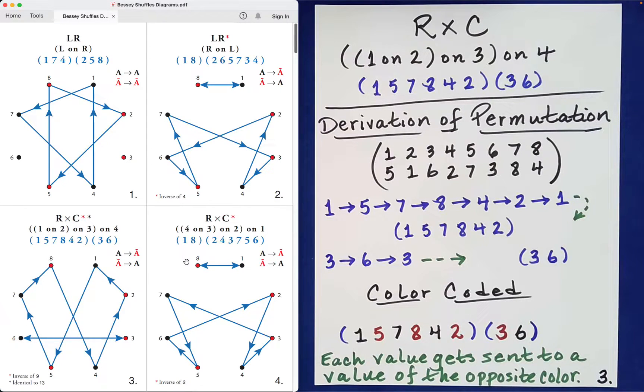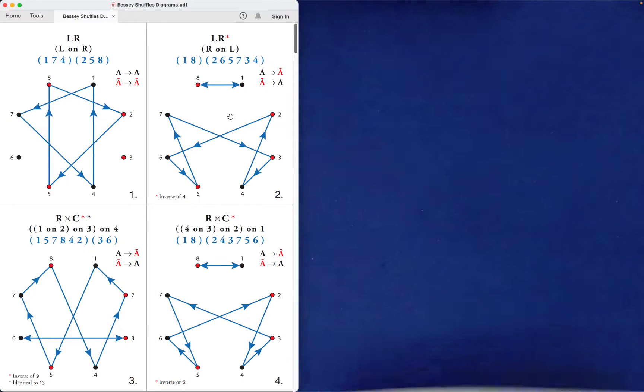So why don't we even just show that really quickly here. So those end up being inverses. And by the way, it's not really at all clear looking at those shuffles that they should be inverses, it really really isn't.